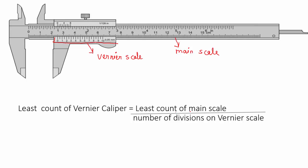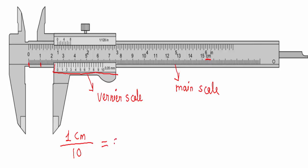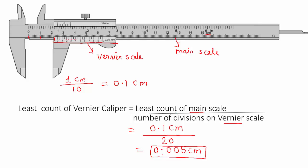First we find the least count of the main scale. This is a centimeter scale; from 0 to 1 centimeter the scale reading is 1 centimeter, divided into 10 divisions, giving 0.1 centimeter as the least count of the main scale. Plugging in: 0.1 centimeter divided by 20 divisions on the Vernier scale gives 0.005 centimeter. This is the least count of the Vernier calipers.